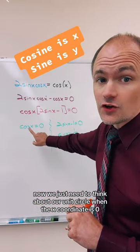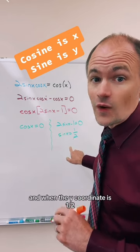Now we just need to think about our unit circle when the x-coordinate is 0 and when the y-coordinate is 1 half.